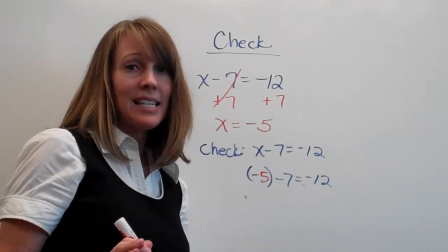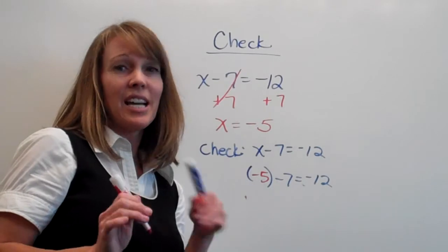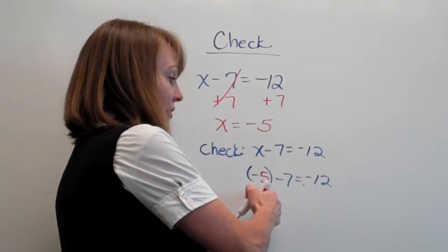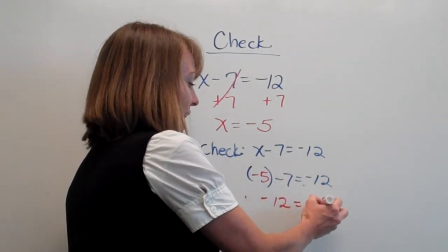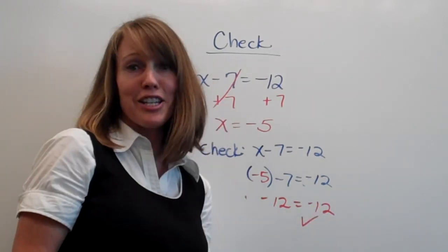At this point, it should be easy. It should work out and be really nice, and we've made a mistake. Negative 5 minus 7, that is negative 12. That is what I'm looking for. That is a check.